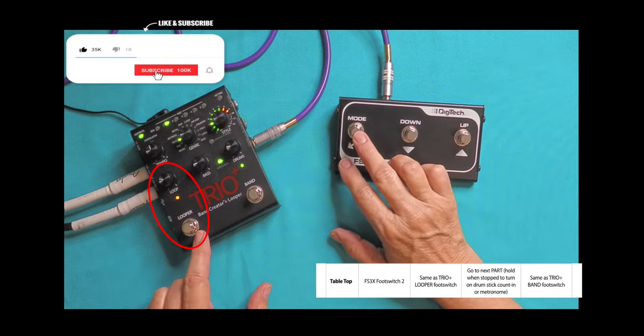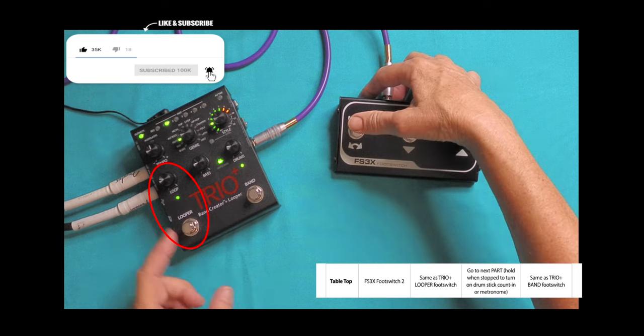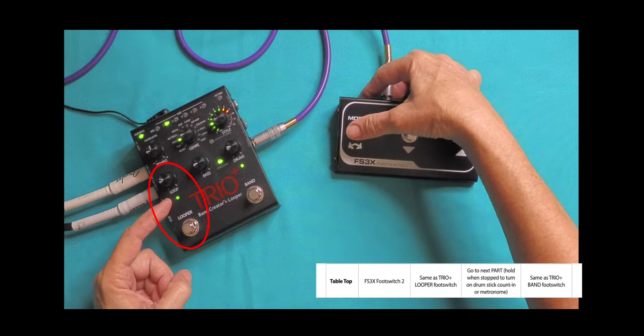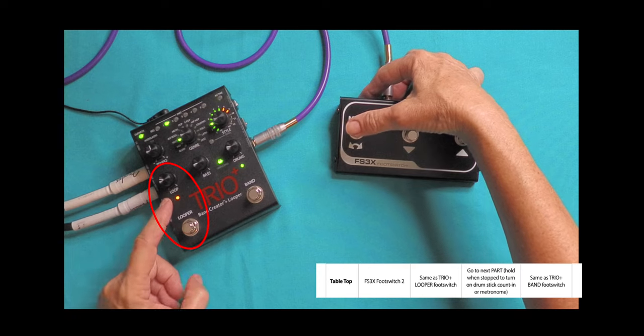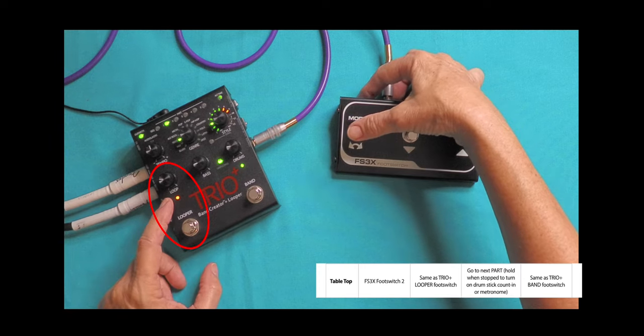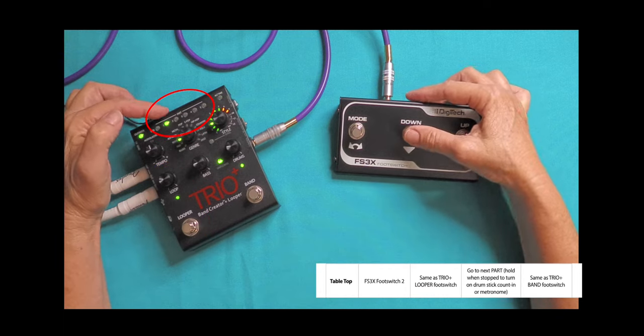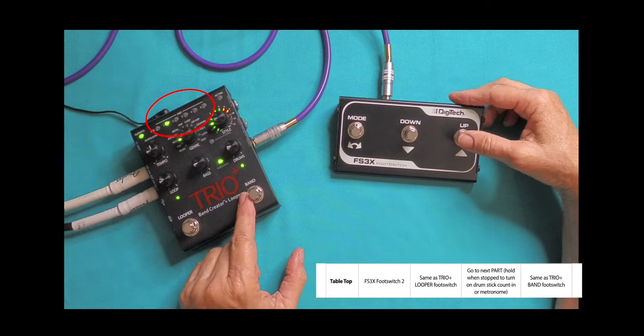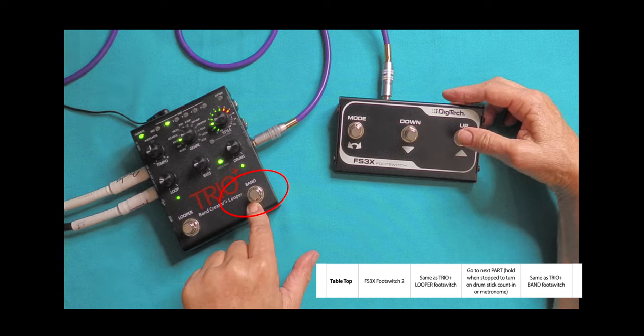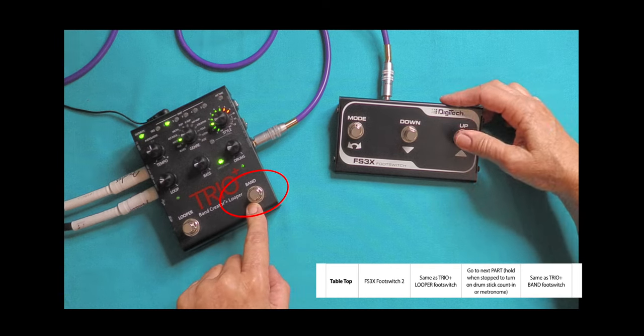This functions as the looper button. Looper green, not recording. Looper yellow, that means it's overdubbing. This goes to the next part, and this will work the same as the band switch. Starts and stops. So that worked good.